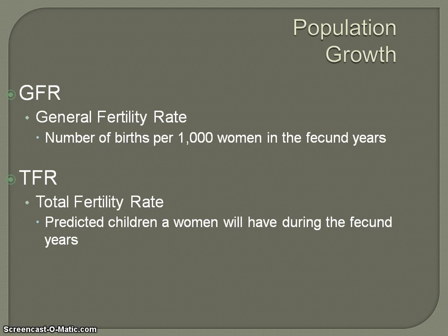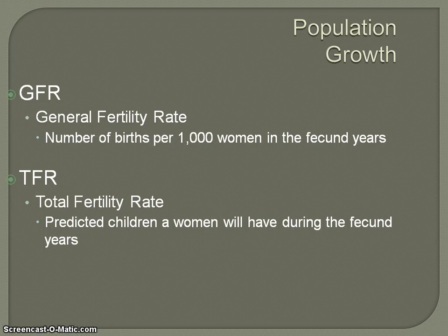Both of these numbers are going to depend on the country and what is going on there. A country doesn't necessarily want a number that is too low, because if you don't have enough children, you can't replace the population. But typically in countries where we see very high numbers, that's where we're going to have issues with population growth, because medicine and improved nutrition have allowed far more children to survive. So if these rates are too high, the population of that country is going to grow.